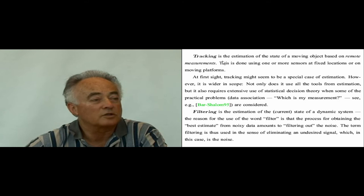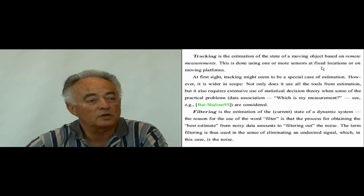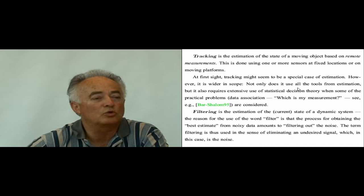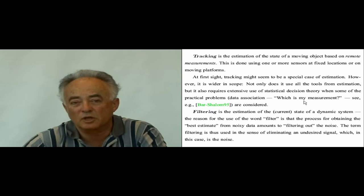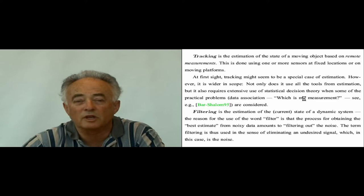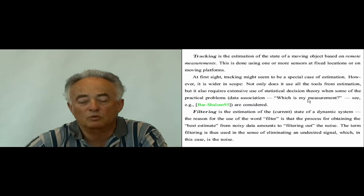Tracking is the estimation of the state of a moving object based on remote measurements. We have remote sensors — radar, sonar, electro-optical, video — which can be at fixed locations or on moving platforms. Tracking might appear as a special case of estimation, but it is significantly wider in scope, because it also requires extensive use of statistical decision theory. One such practical problem is data association — which is my measurement — where in remote sensing the exact origin of measurements is not always known, giving rise to measurement origin uncertainty.